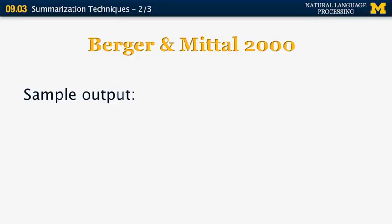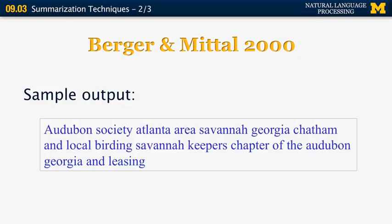Here's an example output of the ultra summarization system given a document about the birding society in Savannah — a headline produced from a fairly large document by keeping the most important words while still preserving as grammatical an output as possible.